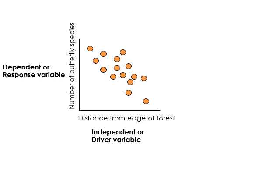The response or dependent variable — butterfly species richness — is on the y-axis. Each orange circle represents a plot. We see a pretty clear relationship: as distance from forest edge increases, we have fewer species. We can run a correlation or regression model on that. If we get a p-value less than 0.05, we'd say there's a statistically significant relationship. If it's less than 0.01, we might say it's highly significant.